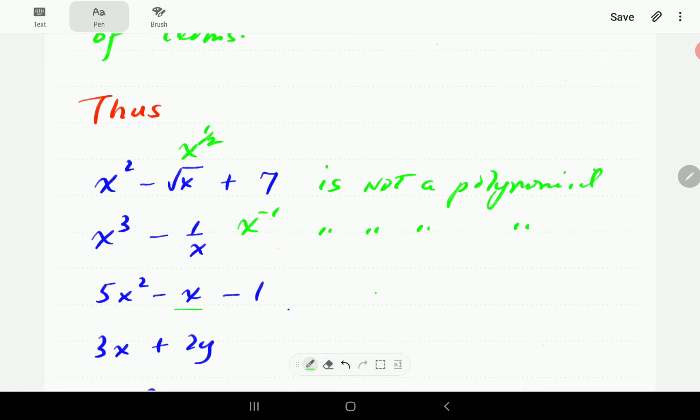5x squared minus x minus 1, though, is a polynomial, because the power here is 2, the power here is 1. Power here, if you like, that is 1, x to the power 0. So this one is a polynomial.